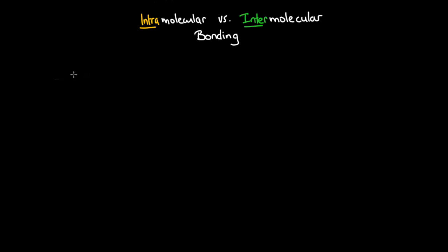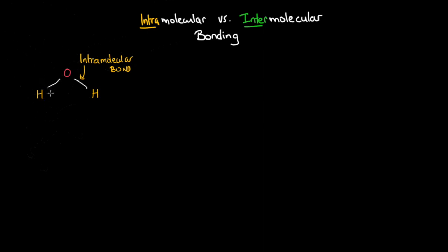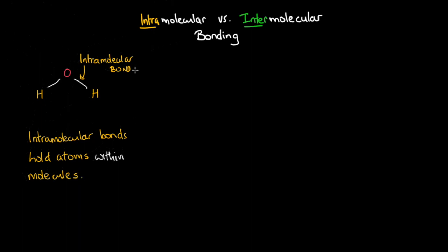Intramolecular bonding has to do with the bonds that exist within molecules. For example, in a water molecule, the intramolecular bonds are the bonds that hold the hydrogens to the oxygen. Intramolecular bonds hold atoms within molecules, and classic examples include covalent bonds and ionic bonds.